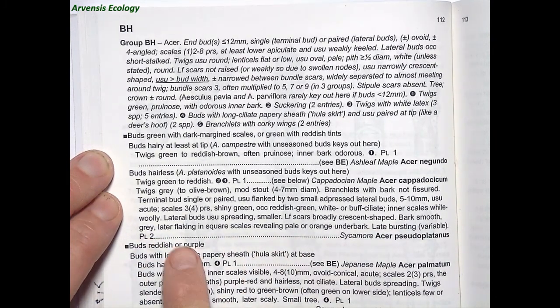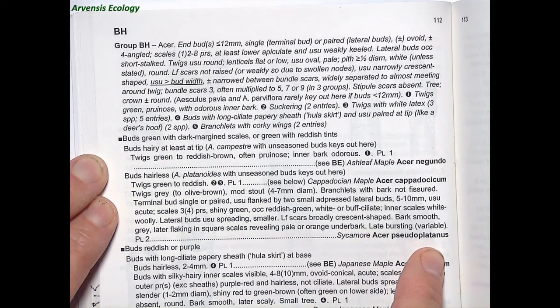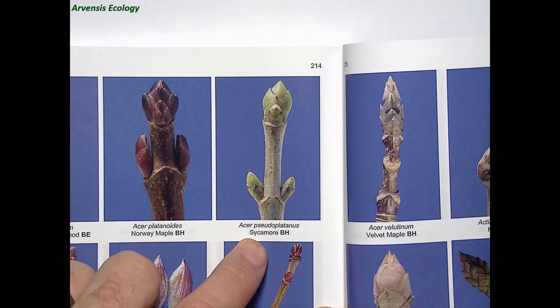Then we decide: are the twigs green to reddish, or grey to olive brown? Reading the description for Acer cappadocicum: twigs grey to olive green, bark not fissured, terminal bud single or paired flanked by two small adpressed lateral buds — that's what we've got — five to ten millimetres, usually acute. The scales are three, occasionally four pairs, making six in total, shiny green, occasionally reddish, white or buff ciliate along the margins — exactly what we have. Leaf scars broadly crescent-shaped. So what we've got is sycamore, Acer pseudoplatanus, illustrated beautifully on plate two with those green bud scales and white fringe, and the opposite buds with interpetiolar ridge — a good example of how quick and efficient the key can be.